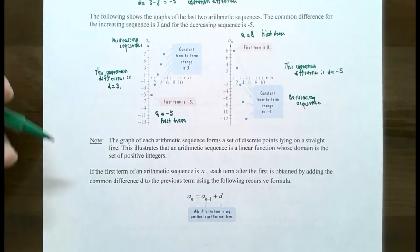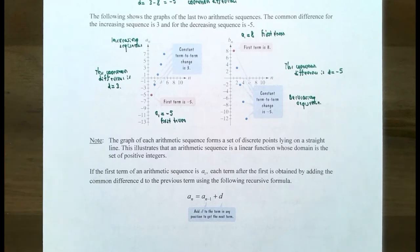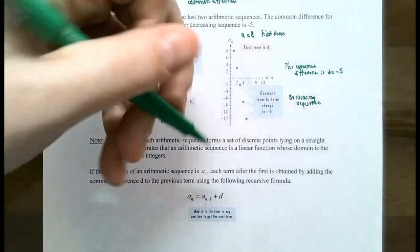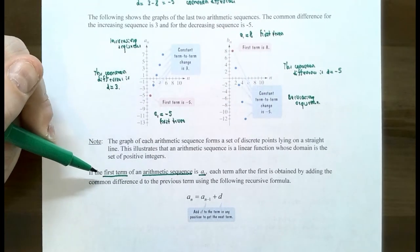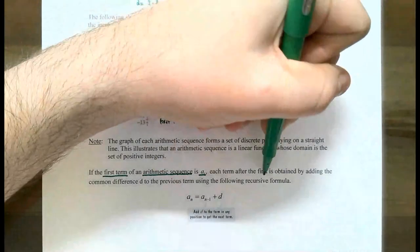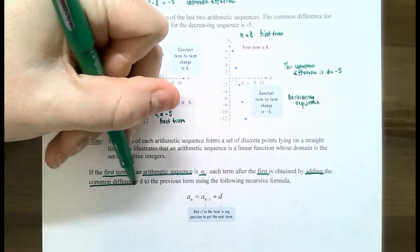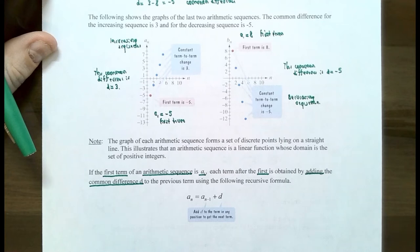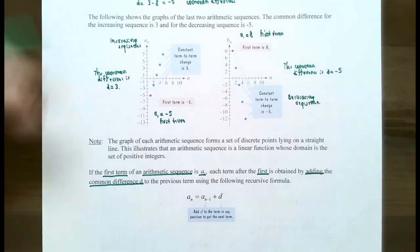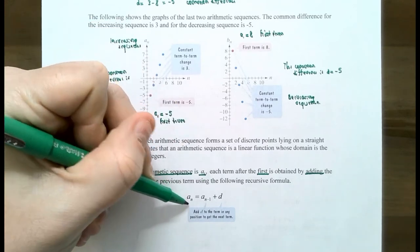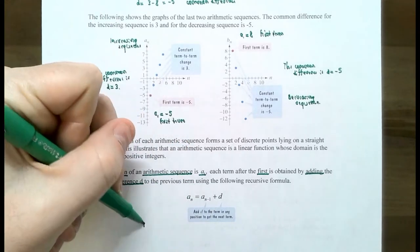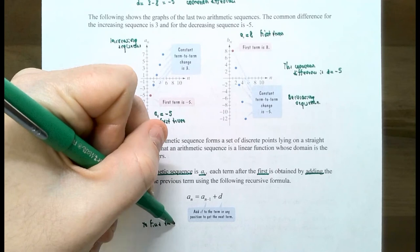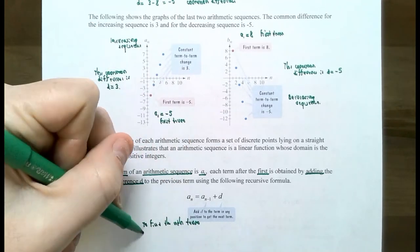The first term in an arithmetic sequence is a sub 1. We're going to come up with a general formula so we can find the 18th term without knowing the previous 17 terms. To get the second term, you take the first term and add the common difference d. You get a sub 3 by taking a sub 2 and adding another d. This gives us a recursion formula: to find the nth term a sub n, you take the previous term a sub (n-1) and add the common difference.